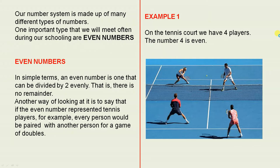In simple terms, an even number is one that can be divided by two evenly. That is, there is no remainder.